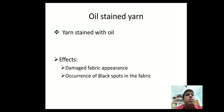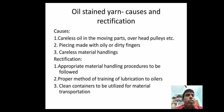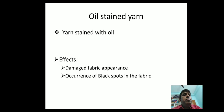Oil stained yarn is yarn stained with oil, causing damage to fabric appearance and occurrence of black spots in the fabric. Causes include careless oiling of moving parts and overhead pulleys, piecing made with oily or dirty fingers, and careless material handling. Rectification requires appropriate material handling procedures, proper training of lubrication workers, and use of clean containers for material processes.